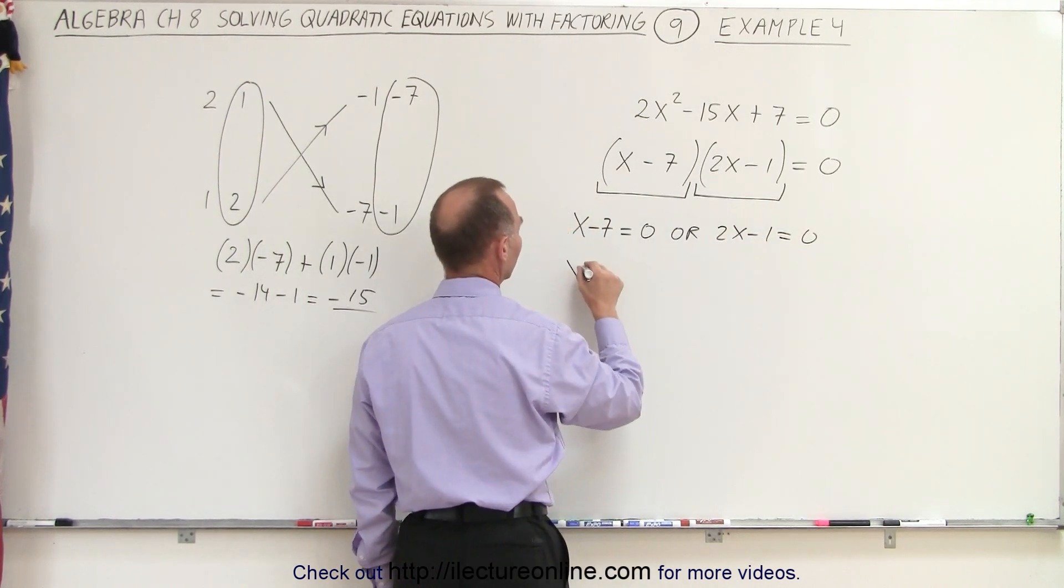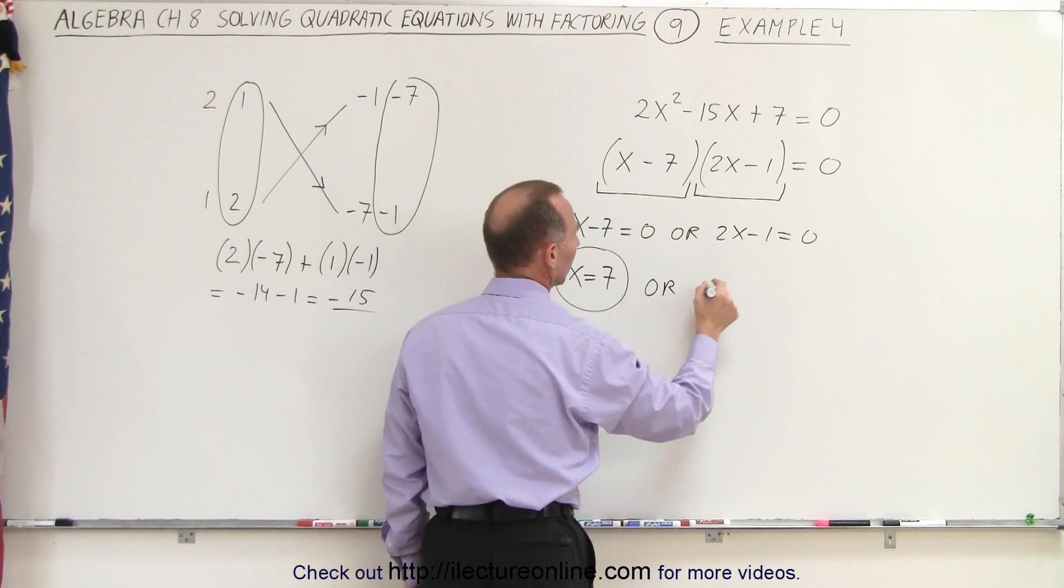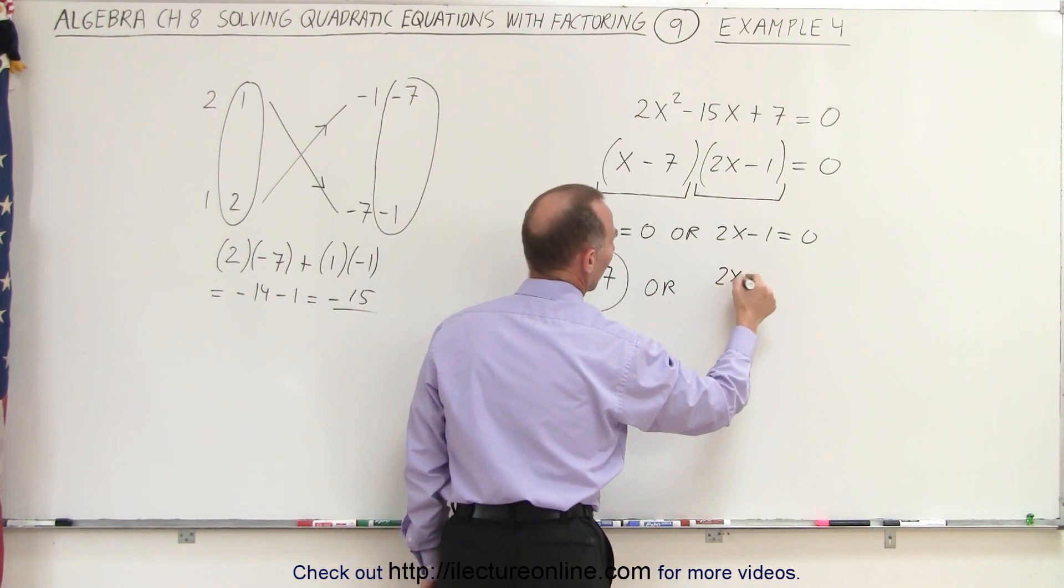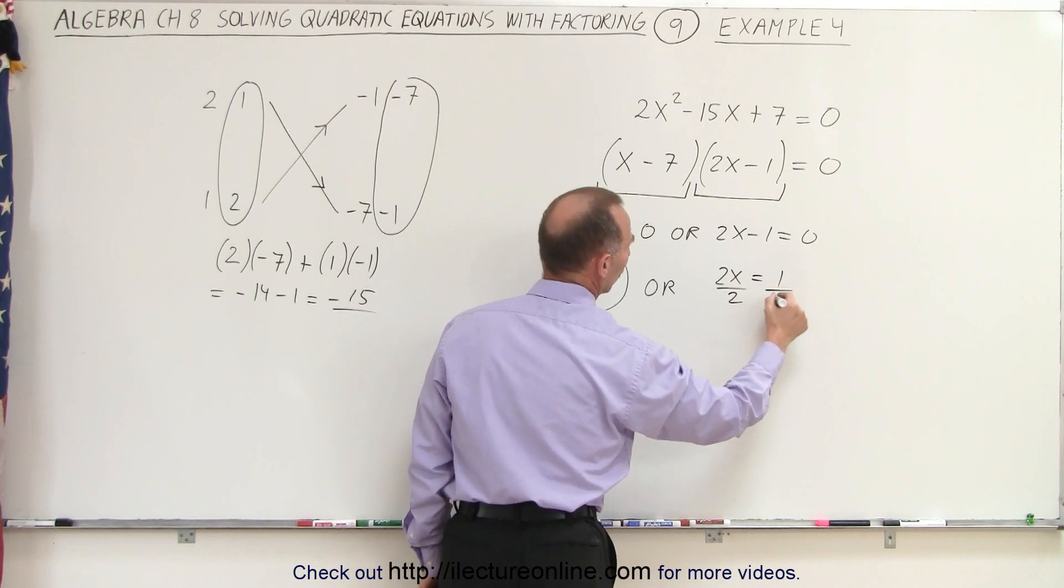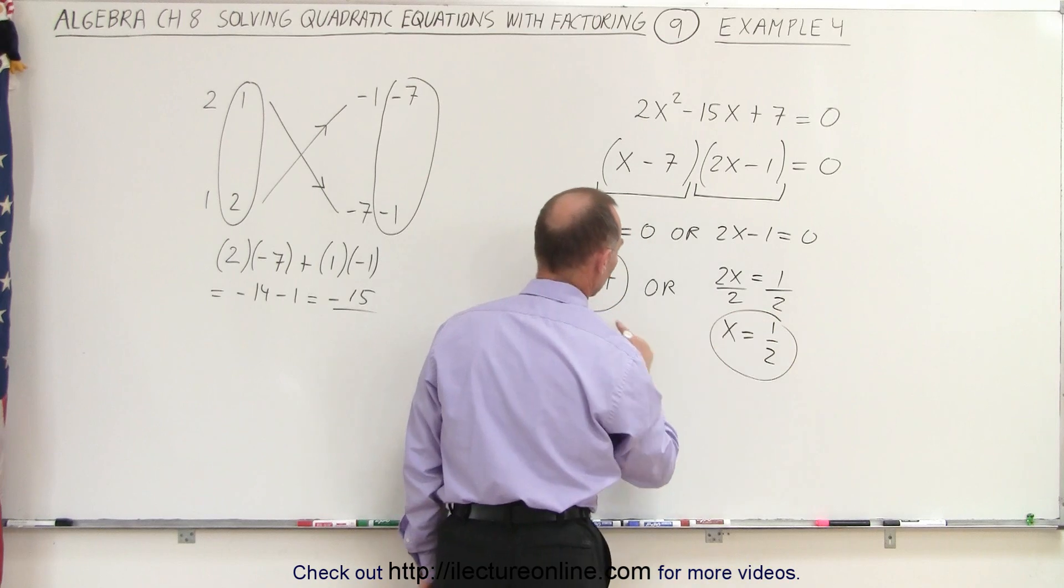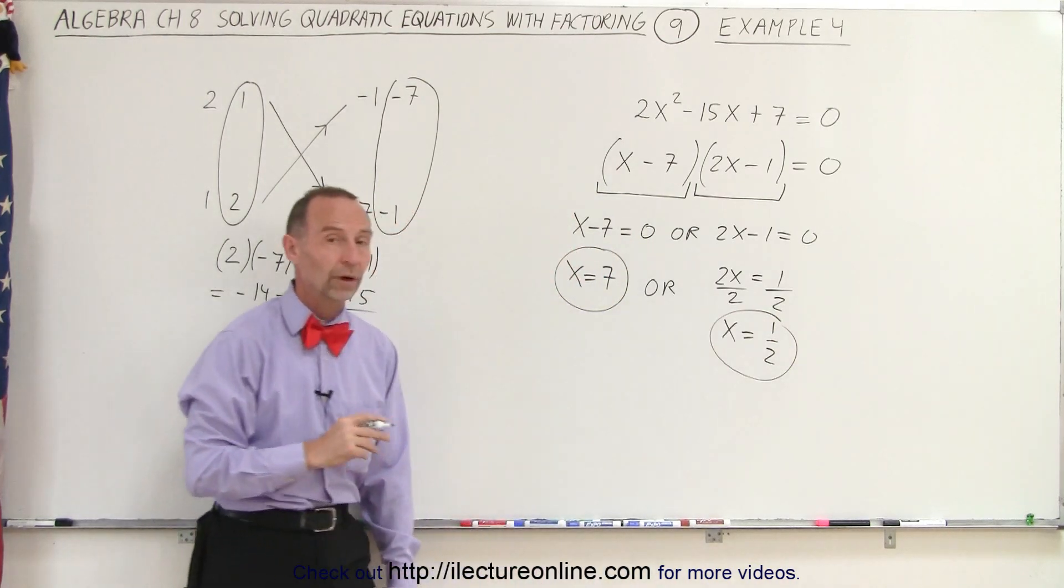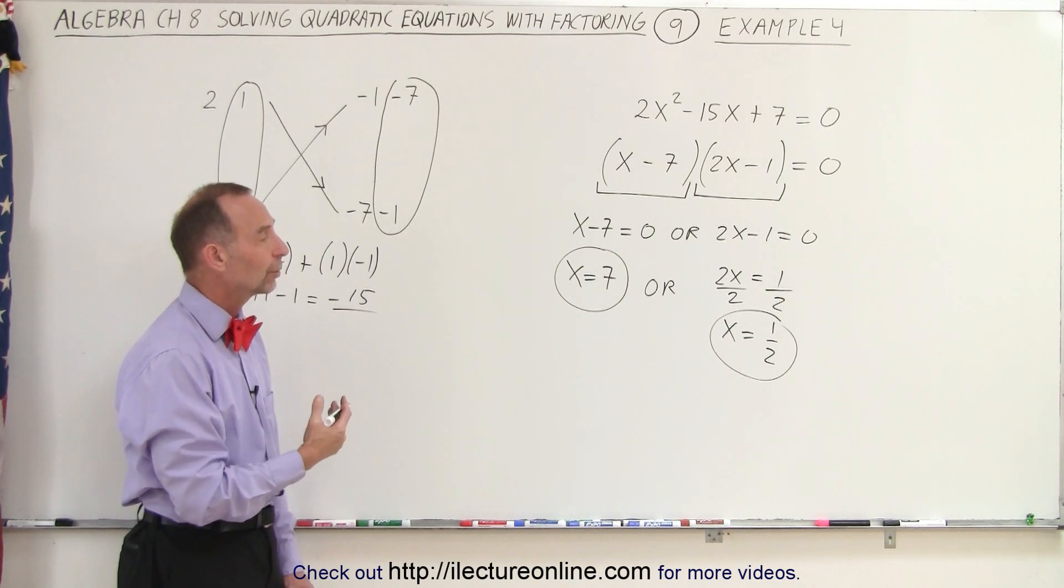Which means that x equals 7 is one of our solutions, or here we have 2x equals positive 1. When we divide both sides by 2, we get x equals 1 half as the other solution. So here's the two solutions to our quadratic equation. Either x equals 7 or x equals 1 half.